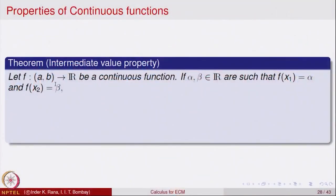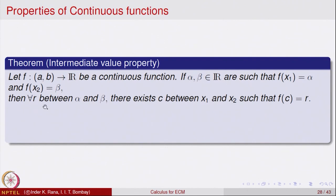Let f be a function defined on an interval [a, b] to R which is continuous. Alpha and beta are two real numbers which are in the range of the function — that means there are points x₁ and x₂ belonging to [a, b] such that f(x₁) = alpha and f(x₂) = beta.